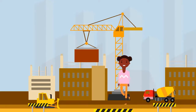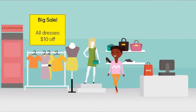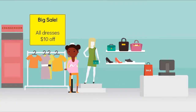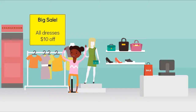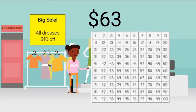Let's go shopping to find out about 10 less. Here we are at the store. I need to buy a new dress and want to find one that is on sale. Here is a rack of dresses. The sign says that they are $10 off, which means they are $10 less than the normal price. The dress I like is $63. I can take $10 off that price because of the sale. I can use my hundreds chart to help me visualize 10 less than 63. If I start on 63, I know that the number on top of 63 is 10 less.